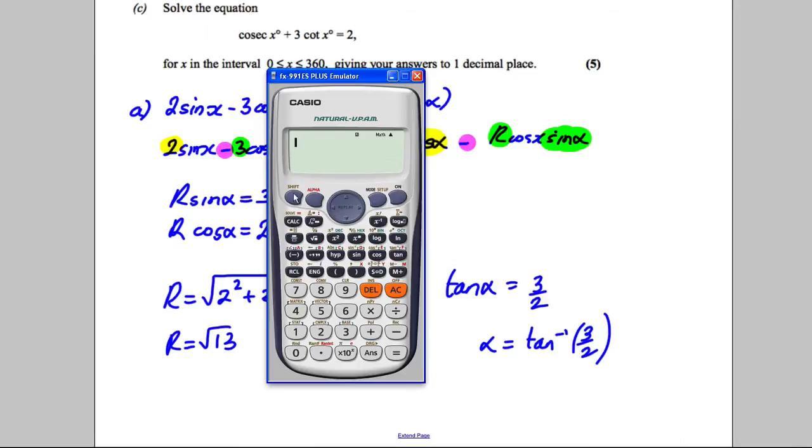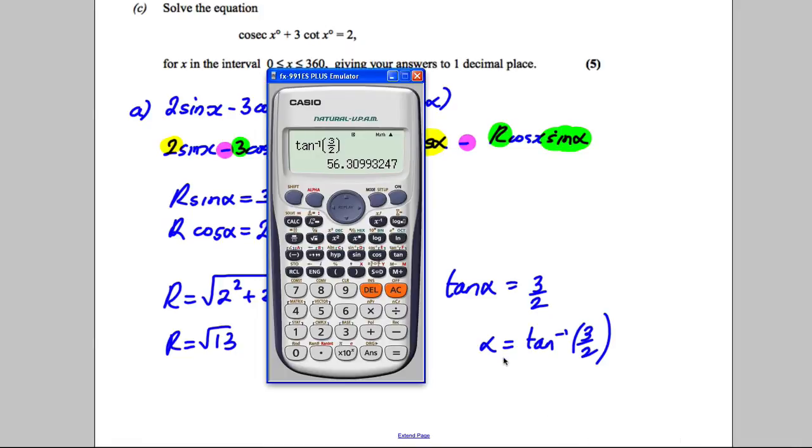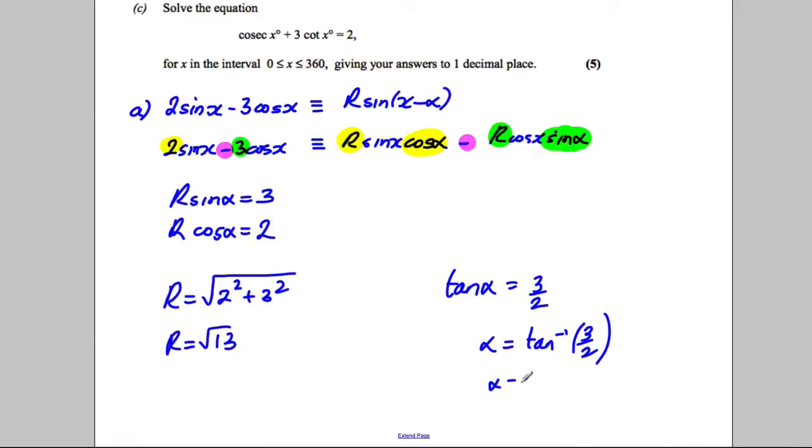Calculate it out in degrees mode this time. So mode degrees, we're going inverse tan of 3 over 2, which is 56.3. Let's do it to 3 significant figures because we're not told otherwise. So alpha is equal to 56.3 degrees.